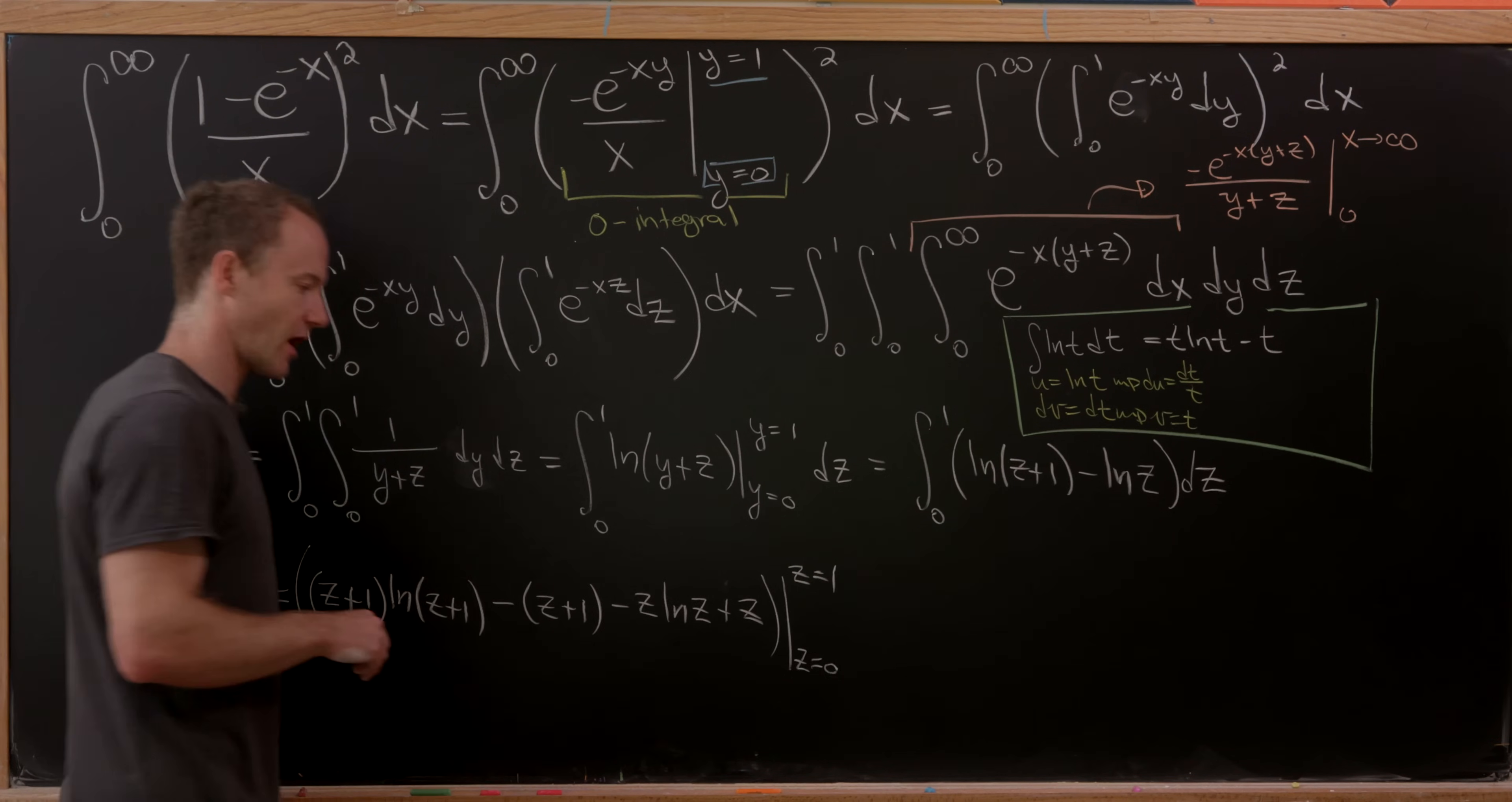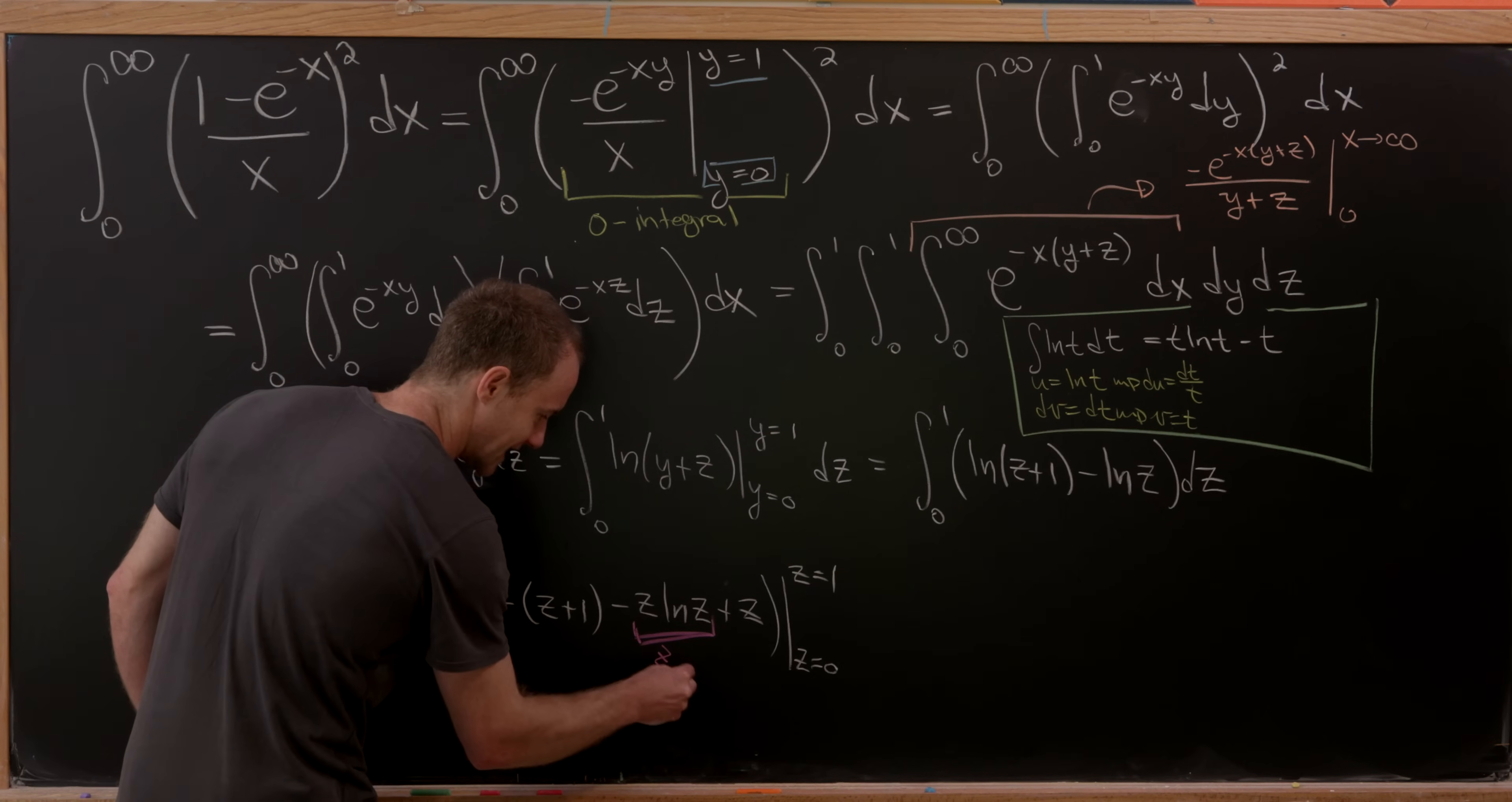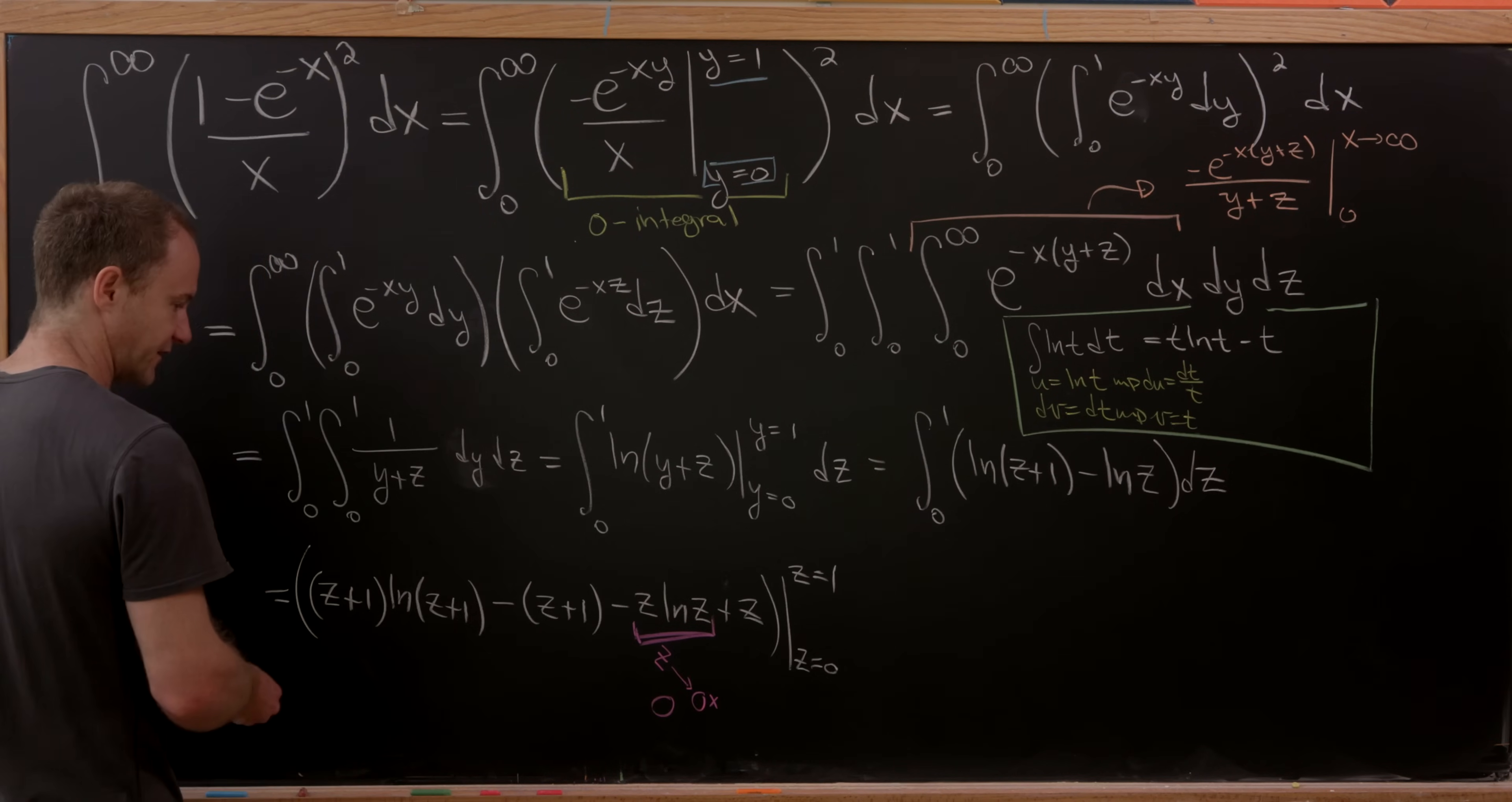But now looking at that, we see that there's a bit of a problem, because the natural log is not defined at z equals 0, and we have this natural log of z term right here. But that's actually not a problem, because if you let z approach 0 from above, which is what's going on there, you'll see that this term will go to 0. And that's not too hard to calculate with L'Hôpital's rule. So that term goes to 0, and then we get further simplification.